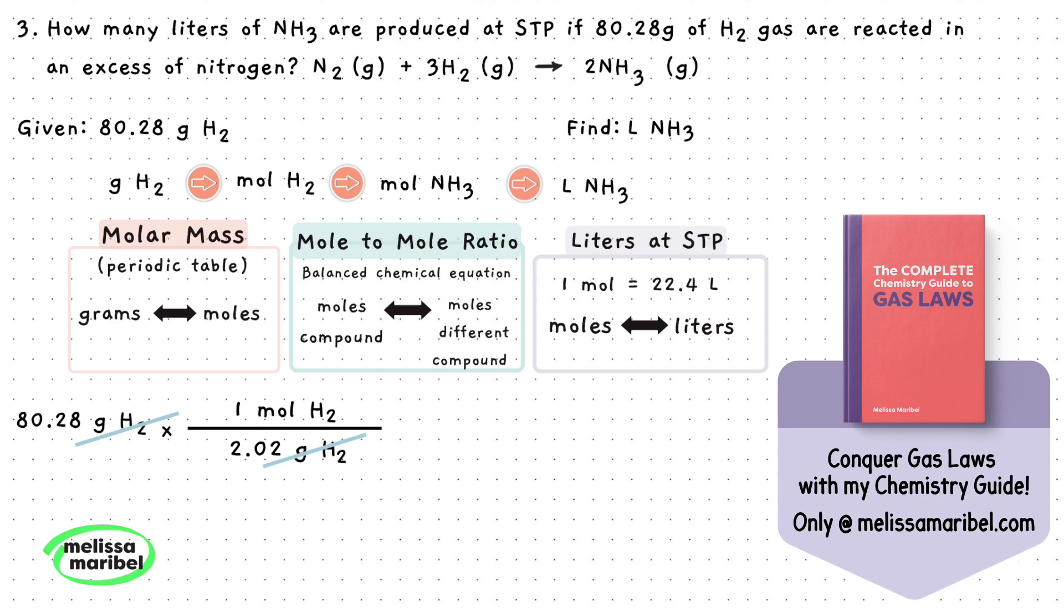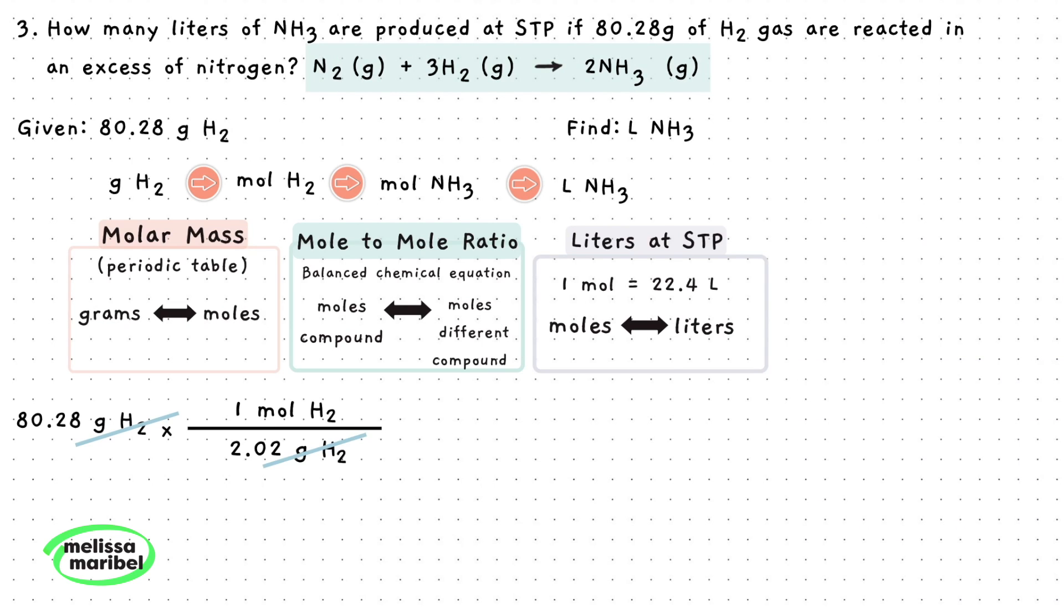We will use a mole to mole ratio to convert the moles of H2 to moles of NH3. Since we are given a balanced chemical equation, we will use the coefficients in front. So the moles of H2 will go on bottom and there are 3 moles of H2, while the moles of NH3 will go on top and there are 2 moles of NH3.